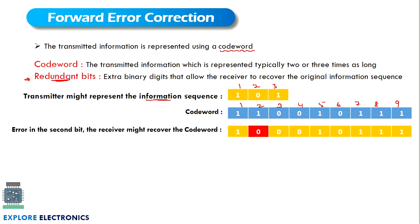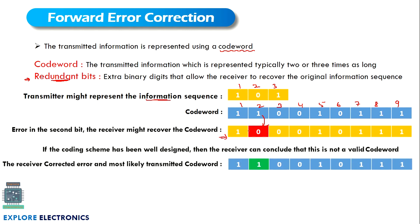If there is any bit flip — for example, due to error this 1 is changed to 0 — the receiver gets this corrupted codeword. If the receiver has an error correction and coding method, it will detect and correct this error by flipping from 0 back to 1. Then the transmitted keyword 101 will be received correctly at the receiver. This is how forward error correction works.